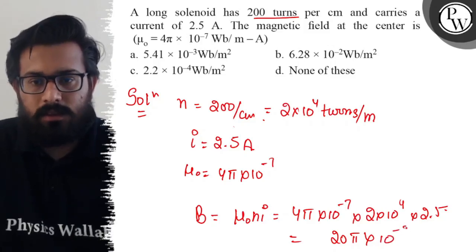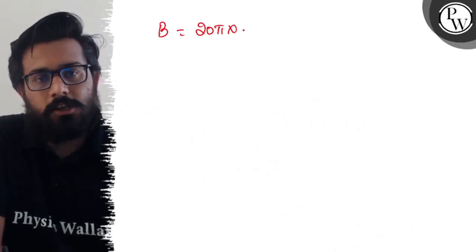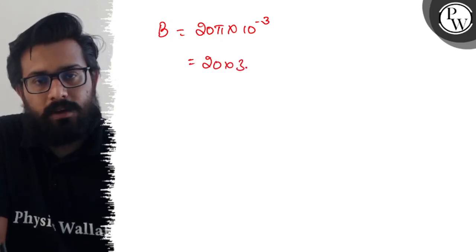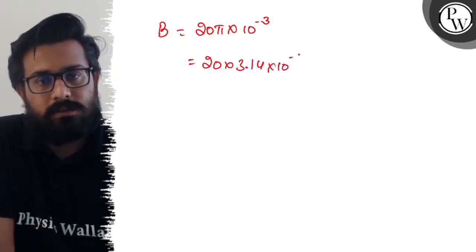So the value of B comes out with 20π × 10^-3. The value of π is 3.14 × 10^-3.